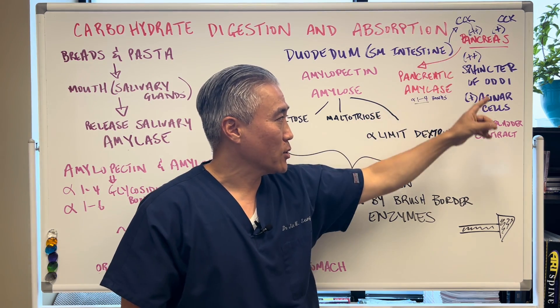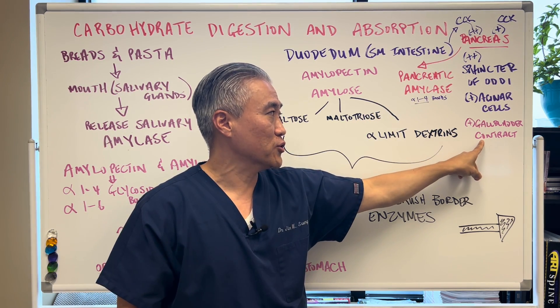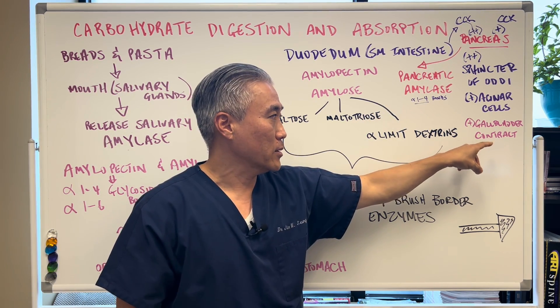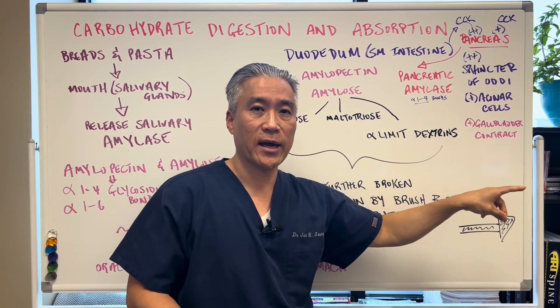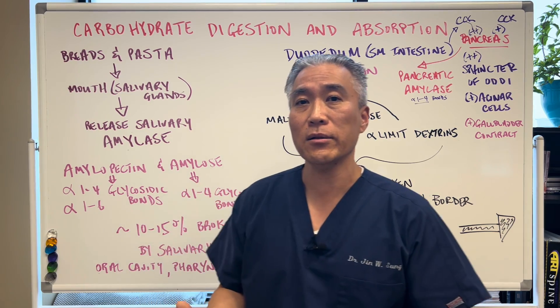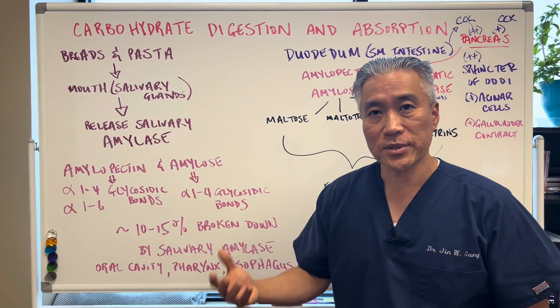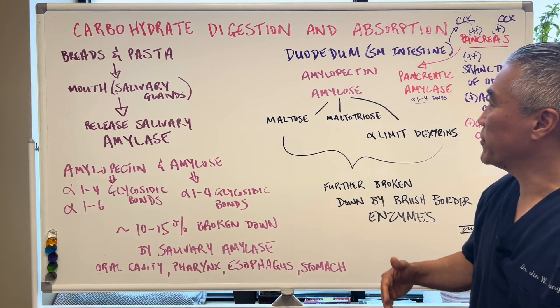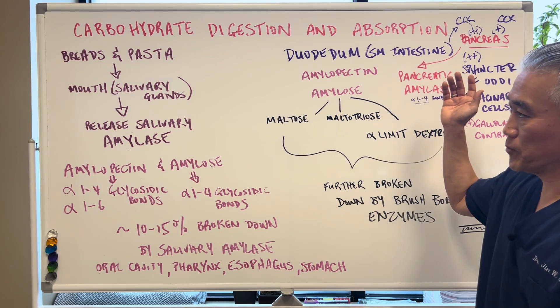Cholecystokinin also helps contract the gallbladder, and gallbladder contraction releases bile to help digest fats, so it has more than one effect here.